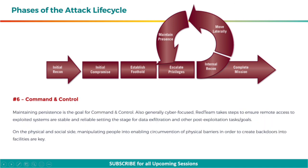The next step is command and control. Maintaining persistence is the goal for command and control. Also generally cyber-focused, the red team takes steps to ensure remote access to exploited systems is stable and reliable, setting the stage for data exfiltration and other post-exploitation tasks or goals. On the physical and social side, manipulating people into enabling circumvention of physical barriers in order to create backdoors into facilities is key.